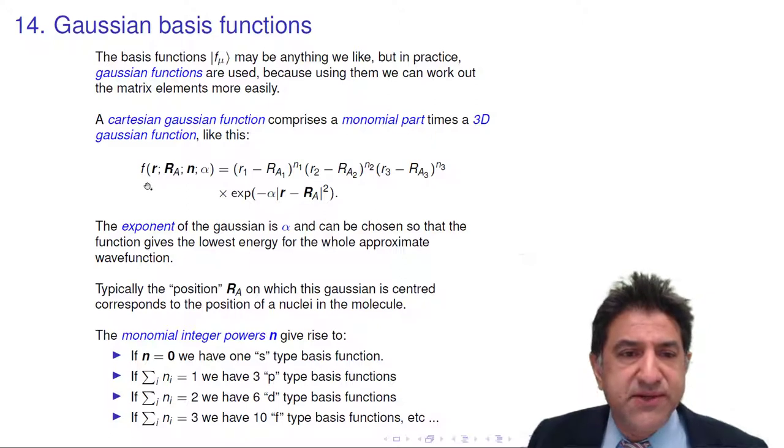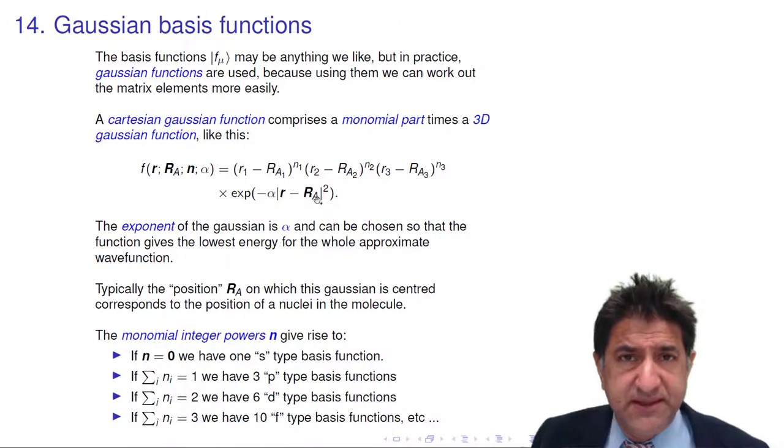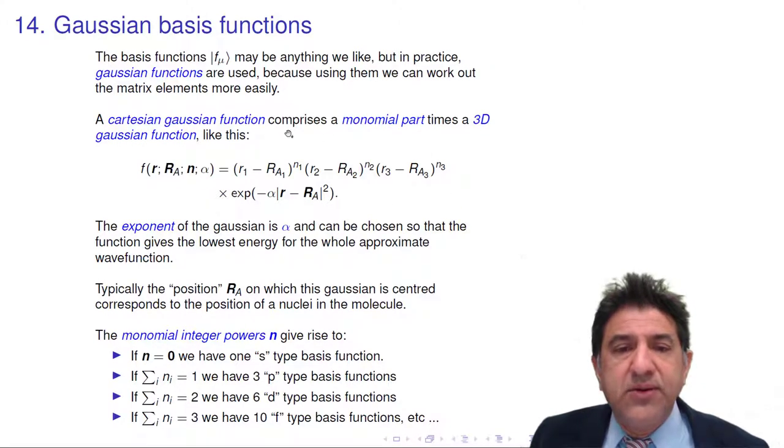Here's a Cartesian-Gaussian function. It's a function of R, three-dimensional space, and it has a position where it's centered, capital R_A. It depends on three integers n, and it has an exponent. So here's the Gaussian function. It's an exponential of minus times alpha, the Gaussian exponent, times R minus capital R_A. This is the center of the Gaussian. So you can see if R was equal to R_A, this would be zero. So the Gaussian is actually a maximum at the position R_A. It's a Gaussian function in three-dimensional space, positioned at position R_A. And the whole thing is multiplied by a monomial term. So this monomial term is just (X minus R_X) to some power, (Y minus R_Y) to some power, (Z minus R_Z) to some power.